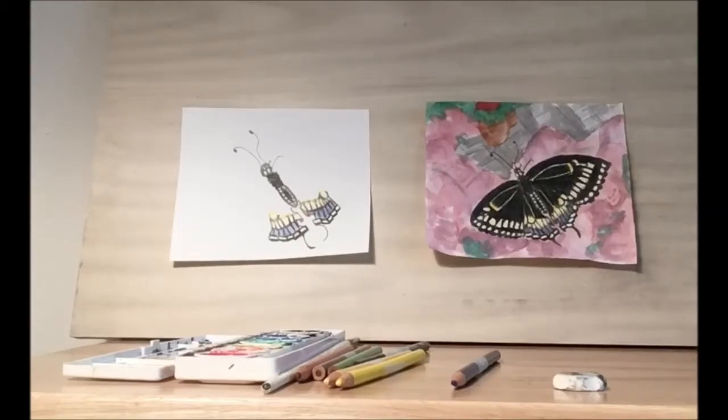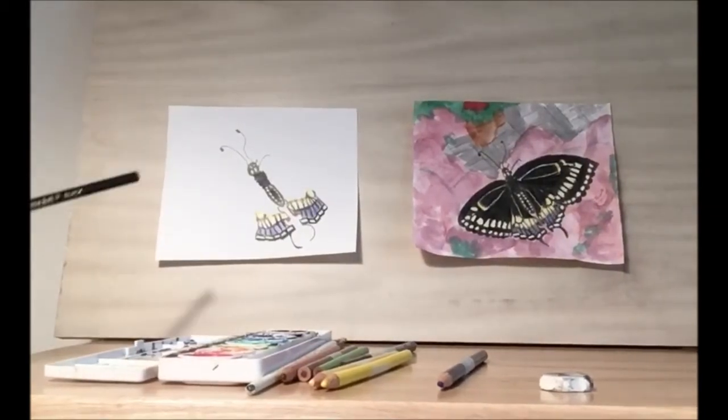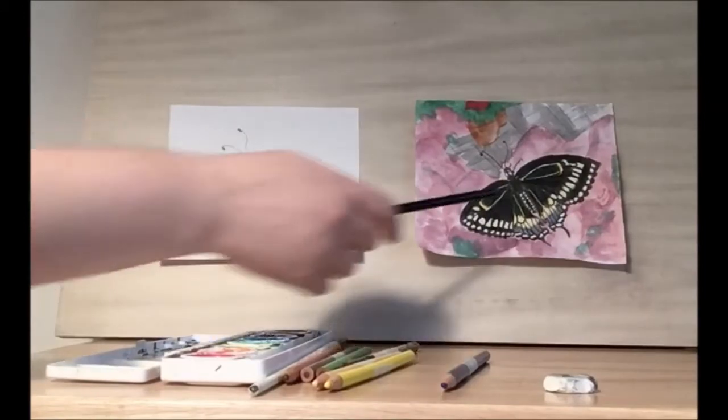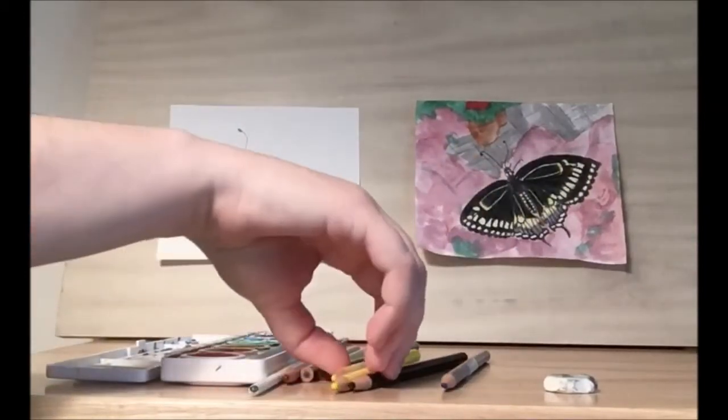So we have our center of our body drawn and the bottom of the butterfly drawn. To do the rest of the wings, we're going to want to do the rest of the tan dots first.